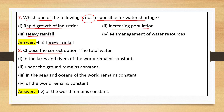Next: choose the correct option — the total water in the world remains constant. Options include: in lakes and rivers, underground, in seas and oceans, or of the world. The total water of the whole world is constant, so the answer is: of the world remains constant.